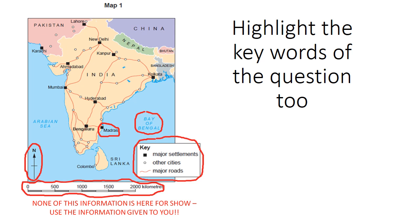Before we get into the nine markers, a reminder to check the question really carefully. Identify any figures given and use as much of that information as you can. Particularly important for nine markers is to highlight the key words of the question, because these are quite long questions and missing one or two words could mean the difference between a nine out of nine answer and a three or even zero out of nine.